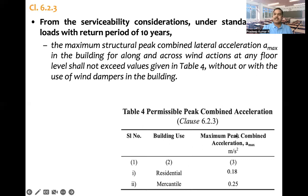Any floor's maximum permissible peak combined acceleration: if the building is of residential type, 0.18 meter per second square, and mercantile, 0.25 meter per second square. This is the peak allowable acceleration of any floor. If values exceed, then we need to do structural changes such that values are lying below the values mentioned in Table number 4.